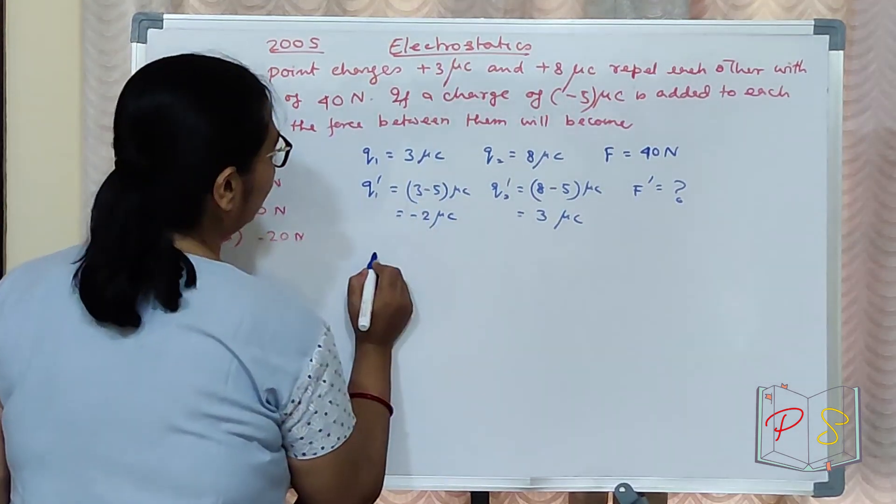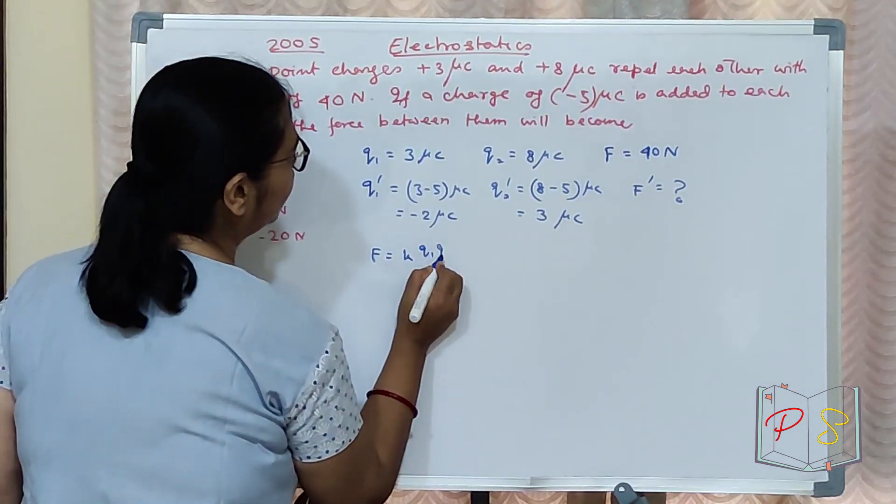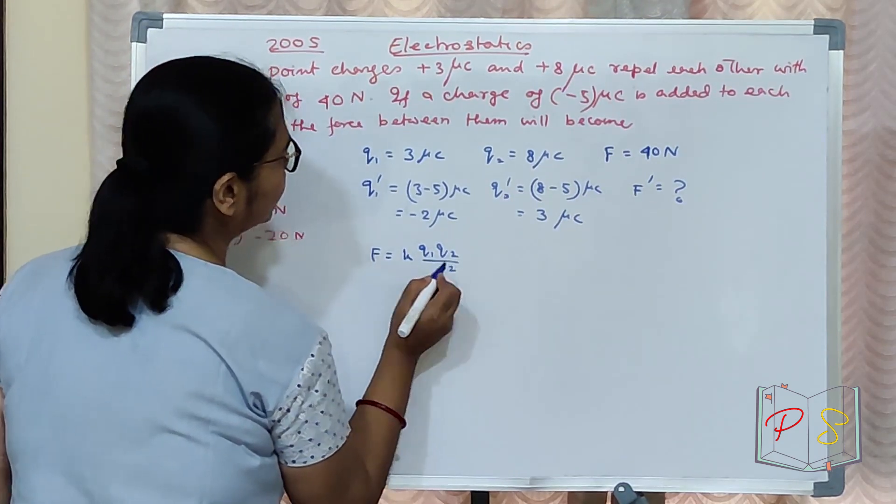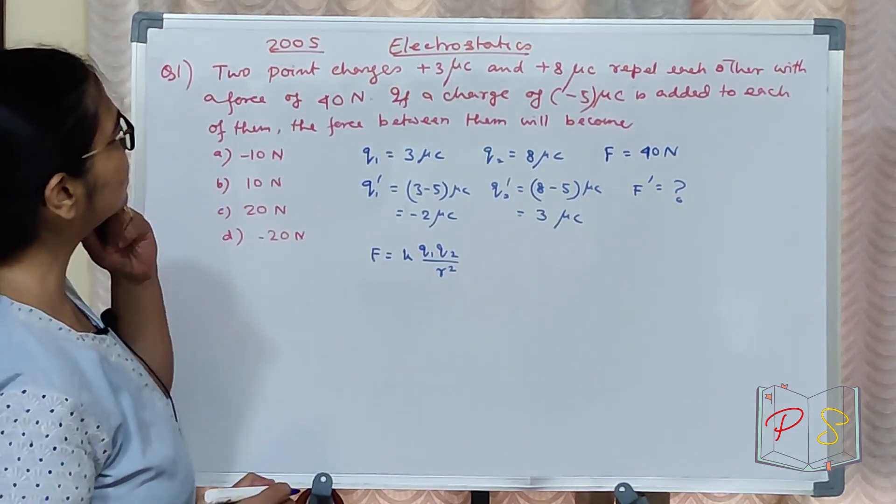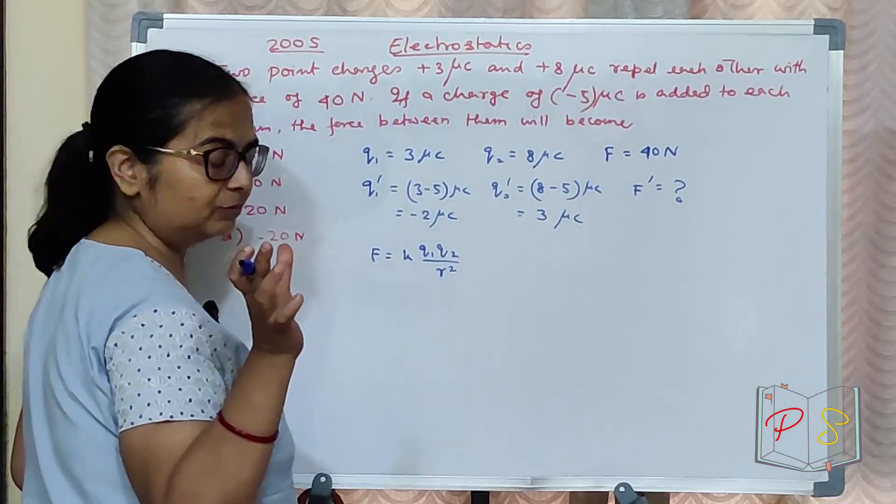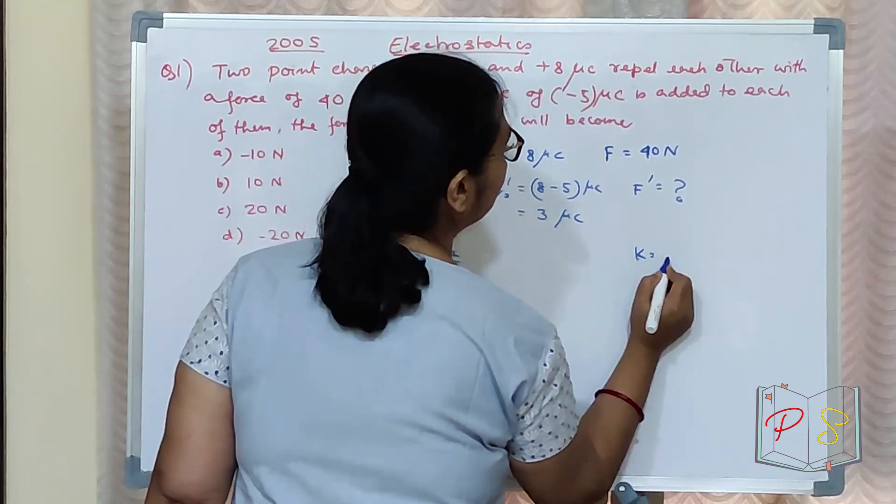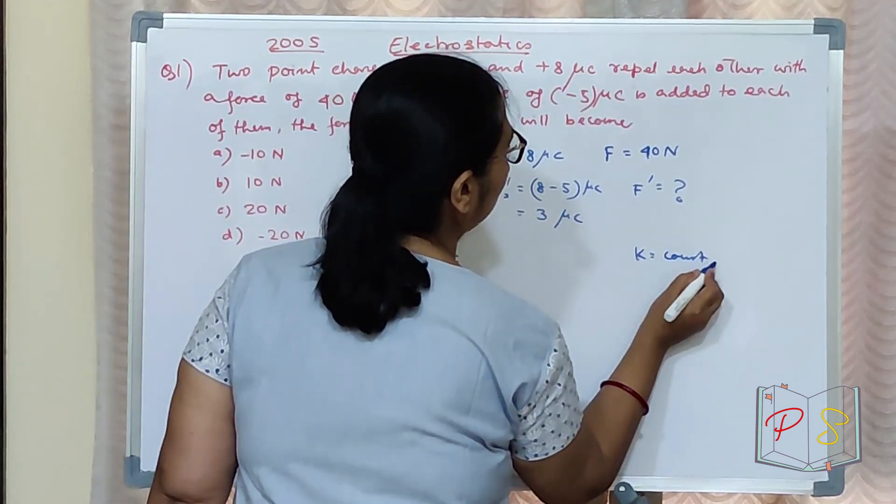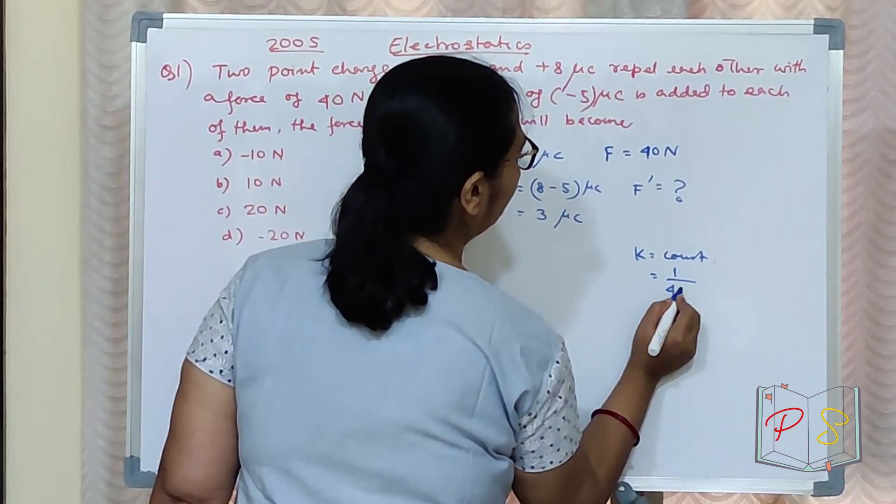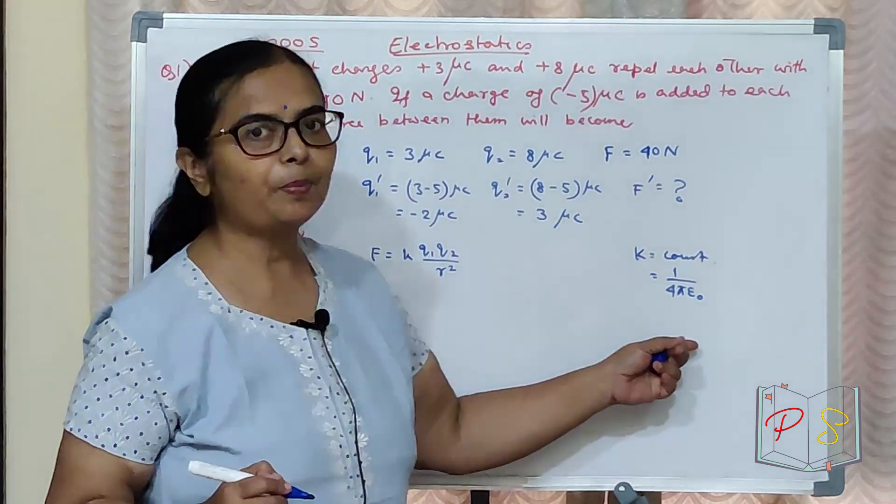Now let's apply Coulomb's force. What is the equation? F equal to K into Q1 Q2 by R square. Distance hasn't changed. K is a constant.